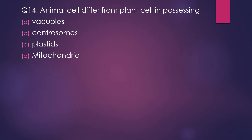Question 14. Animal cells differ from plant cells in possessing: vacuoles, centrosomes, plastids, or mitochondria. The correct answer is option B — centrosomes.